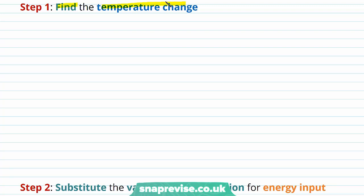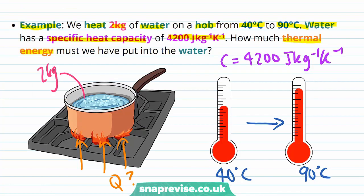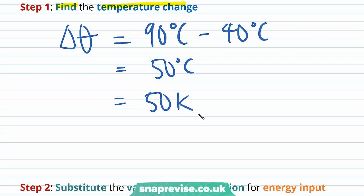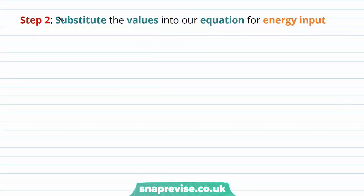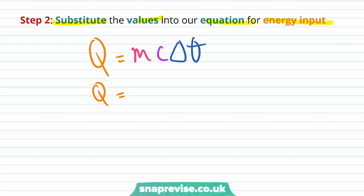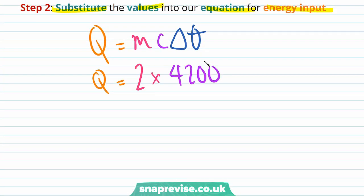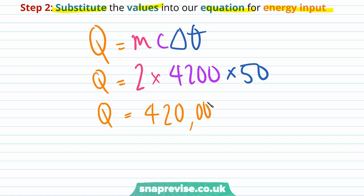Our first step is to find the temperature change delta theta. Delta theta equals 90 degrees Celsius minus 40 degrees Celsius, which equals 50 degrees Celsius, or equivalently 50 Kelvin. Our second step is to substitute into the equation Q equals mass times specific heat capacity times delta theta. So Q equals 2 kilograms times 4200 joules per kilogram per Kelvin times 50 Kelvin, giving us 420,000 joules, or 4.2 times 10 to the 5 joules.